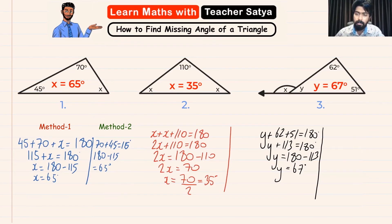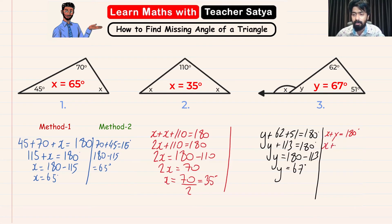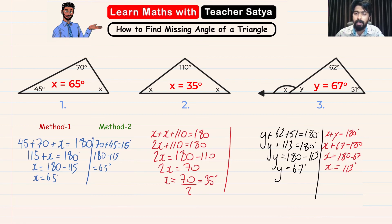The question is also asking us to find the value of x. If you take a look at this, it is a straight line. Therefore, angle x plus y is equal to 180 degrees. Since we know the value of y, let us substitute it: x plus 67 is equal to 180. X is equal to 180 minus 67. Therefore, the value of x is equal to 113 degrees. And that is how we would find a missing angle of a triangle.